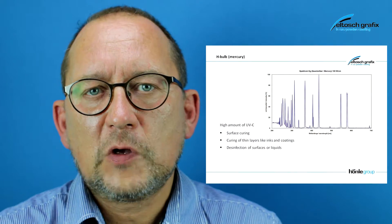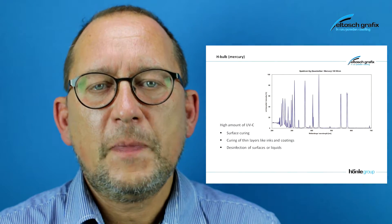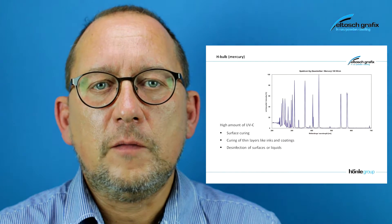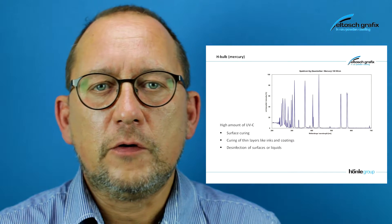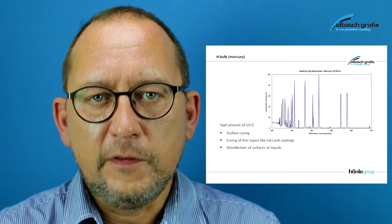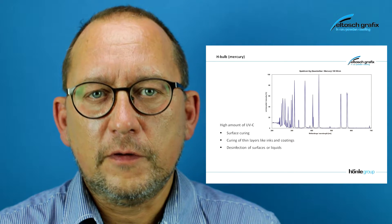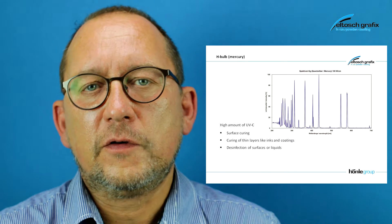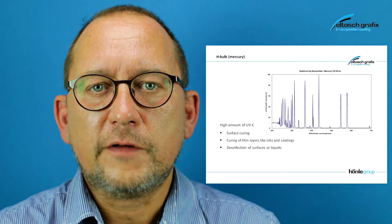Let's talk a little more about the conventional medium pressure lamp. The standard mercury filling has a high amount of UV-C radiation. This radiation is good for surface curing and for curing thin layers of inks and coatings.